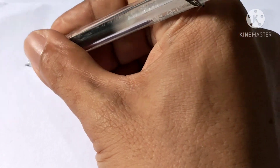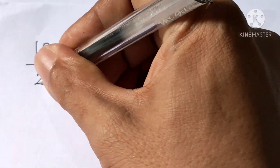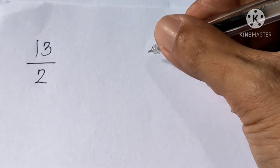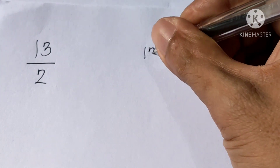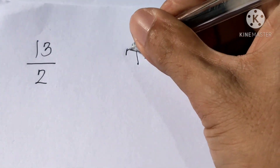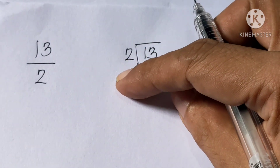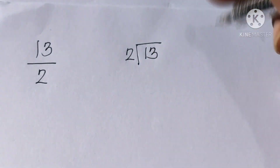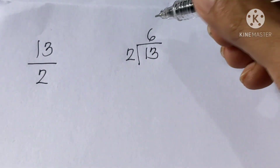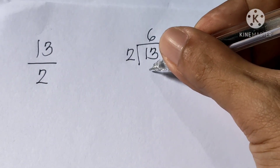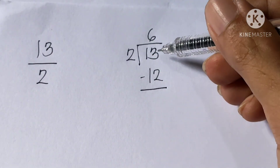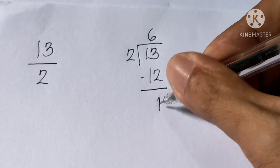Example number 2: 13 over 2. Again, first step — divide the numerator by the denominator. So, 13 divided by 2. How many 2s are in 13? We have 6. Then multiply: 6 times 2 is 12. Then subtract: 13 minus 12 is 1.